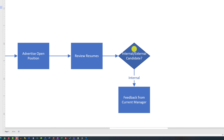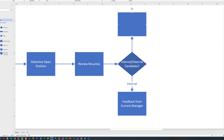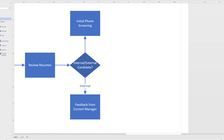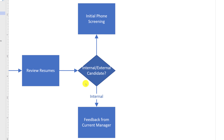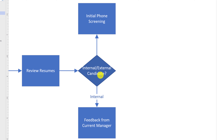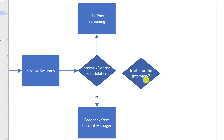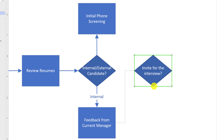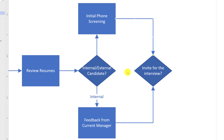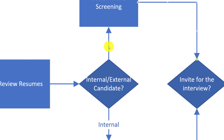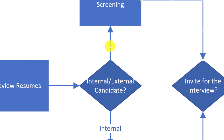For external candidates, the process might be slightly different — for example, doing an initial phone screening to gauge the candidate's interest and salary range. The next step might be the same for both candidate types: deciding whether to invite them for an interview. I can copy an existing decision shape, paste it, rename it, position it along the grid, and connect it from both the internal and external candidate branches.